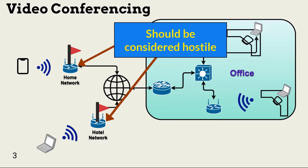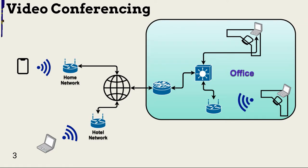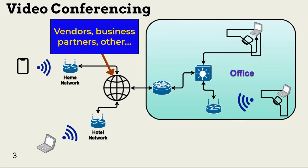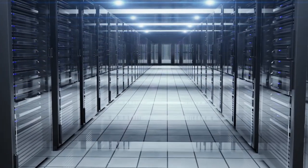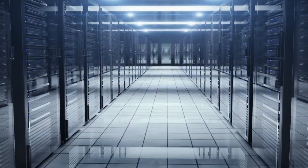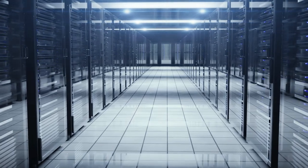During remote meetings, some or all participants might connect over hostile networks — home or public. Connections might also happen across vendor networks. Employees at the office might use office Wi-Fi to connect. Devices used include smartphones, tablets, desktops, or laptops. Organizations implement video conferencing services via on-premise or cloud services.